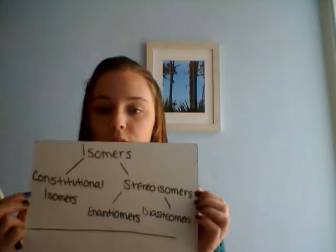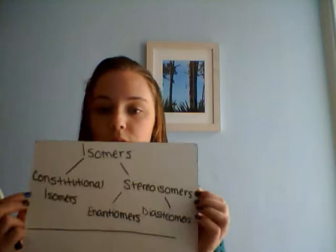Stereoisomers are compounds that are different from each other only in their spatial arrangement, but not in their connectivity. In other words, all of the atoms are still connected to the same atoms — they're just connected in a different place. Stereoisomers can be further broken down into enantiomers and diastereomers.